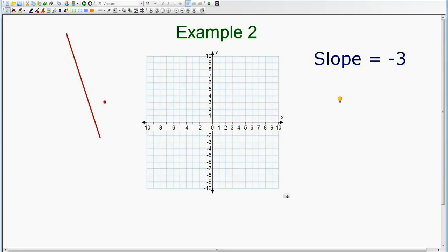We're going to take a look at example number 2, which asks us to graph a line that has a slope of negative 3.